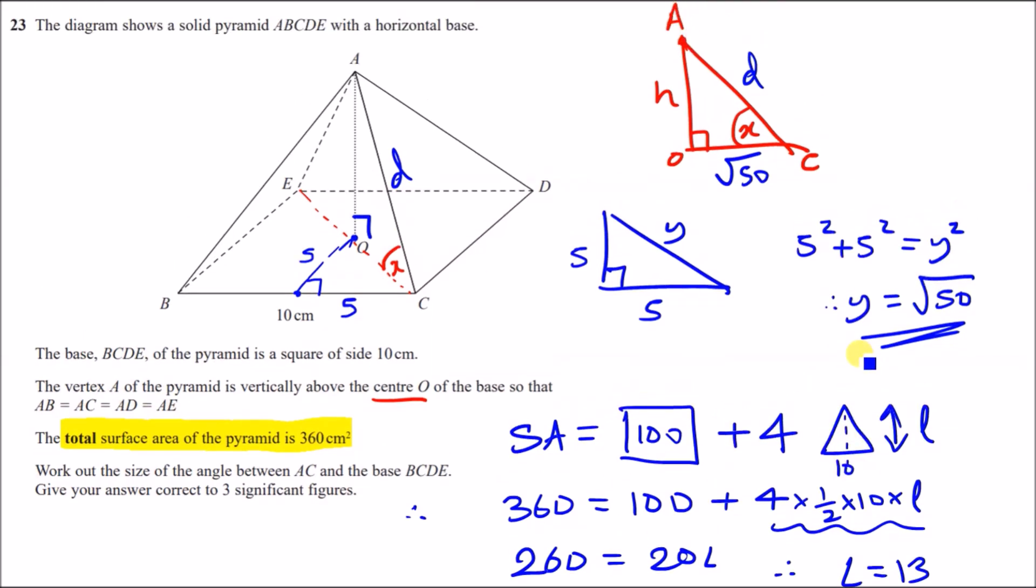So therefore, plug in everything we know. Surface area is 360 must equal the area of a square, which is 100, plus four times the area of a triangle, which is half times the base times the height, which is L. And now, just try and tidy this all up. So subtracting 100 across, you get 260. Tidying up this part here, so you've got four times a half, which is two, times 10, which is 20, so 20 L. And then finding L, just divide 20 across, you're going to get L equals 260 over 20, which is 13. Okay, not bad. So that's an important figure right here.